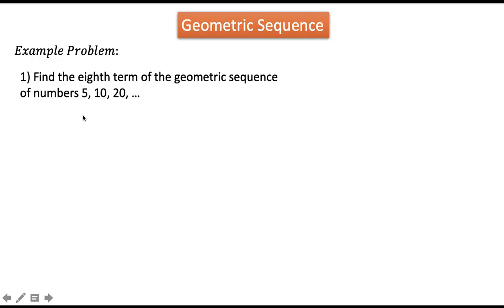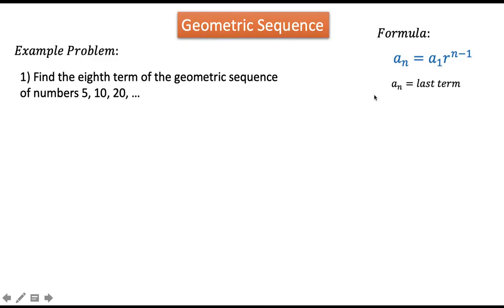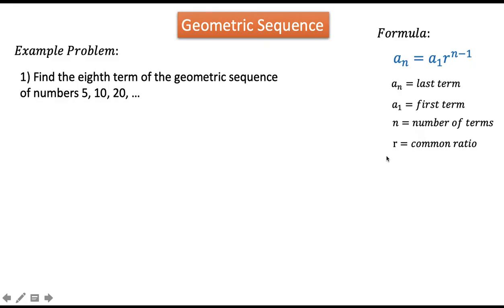Let us answer a geometric sequence example. Find the 8th term of the geometric sequence 5, 10, and so on. This kind of problem can be solved using the formula a sub n equals a sub 1 times r raised to n minus 1, where a sub n is the last term, a sub 1 is the first term, n is the number of terms, and r is the common ratio.